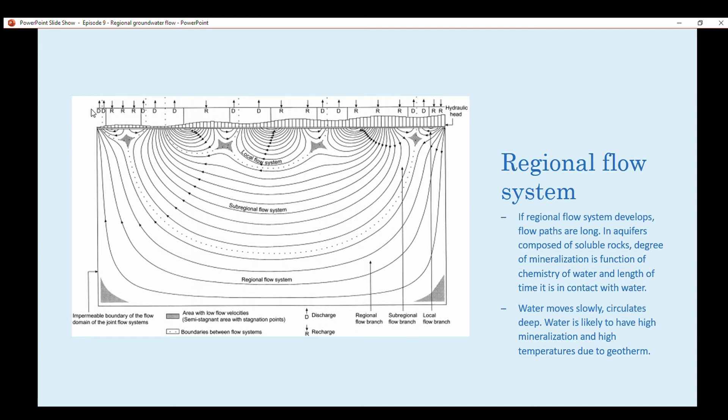If an aquifer is composed of soluble rocks such as limestone, the degree of mineralization is a function of chemistry of water and the length of time it is in contact with water. If you have groundwater flowing through a regional flow system and it's flowing through limestone, it's going to be really hard water, really undrinkable water by the time it reaches the top. At that point, it could be a travertine deposit or just a deposit of calcite. Water moves slowly and circulates deep, and is likely to have high mineralization and high temperatures due to the geotherm. You go deeper into the crust, the warmer it gets, but also as groundwater flows through rocks, it heats up due to friction.